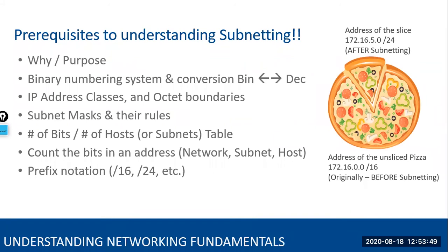Final question: what are the data link layer protocols? Ethernet and Wi-Fi are the main ones, but there are many others — PPP, ATM, Frame Relay, MPLS all operate at layer two, so they'd be data link layer technologies. Back in the old days there was SLIP, ArcNet, and Token Ring. Don't use those anymore. But at the fundamental level, Ethernet and Wi-Fi are the primary data link layer protocols.